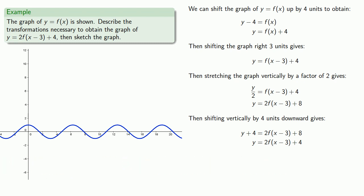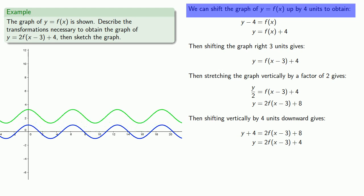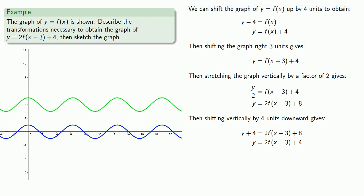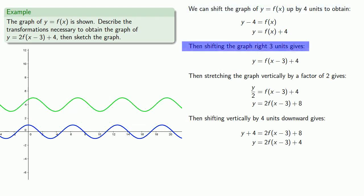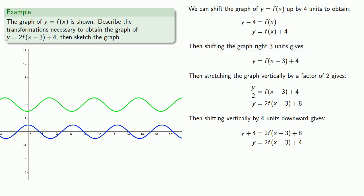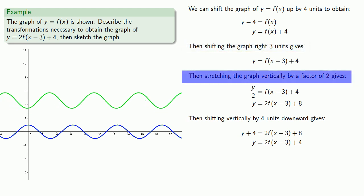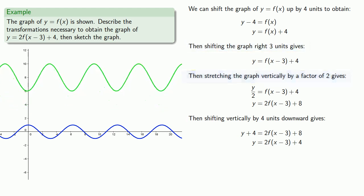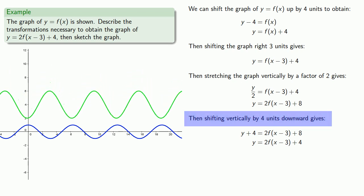Since we've written down all of the transformations we needed, we can apply them to the graph of our original function to get the graph of the new function. We take our graph, shift it up by four units, then to the right by three units, then stretch vertically by a factor of two, then shift vertically downward by four units to get our final graph.